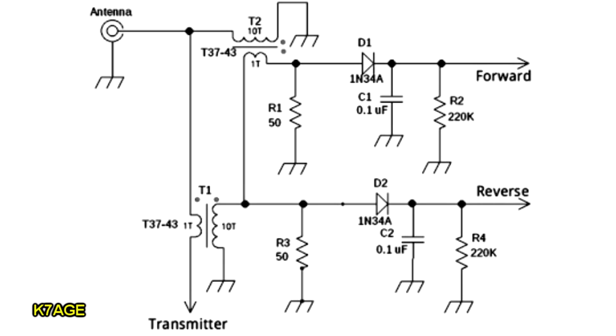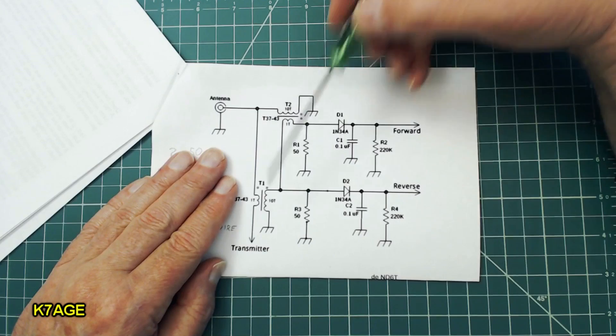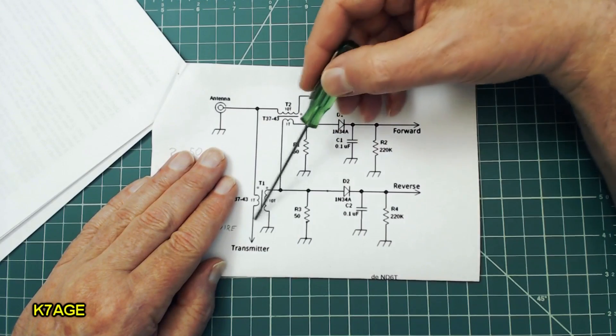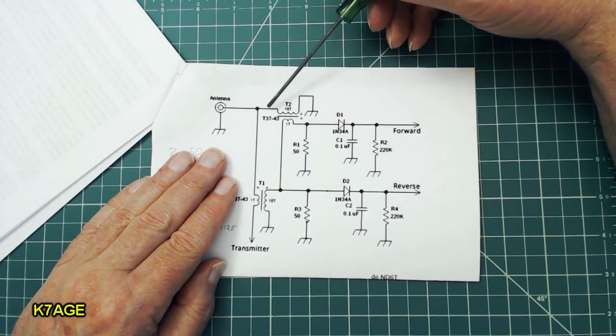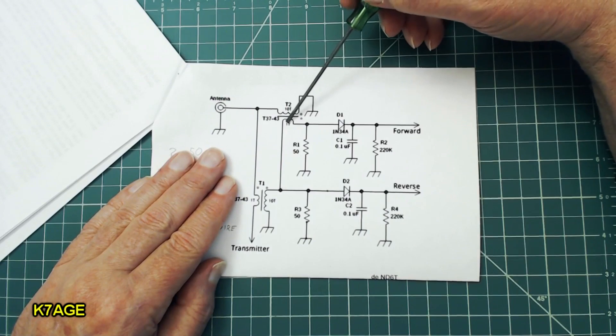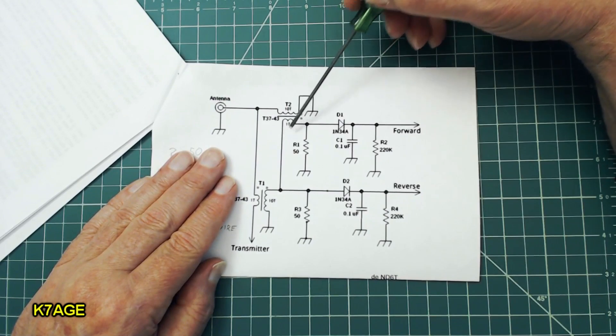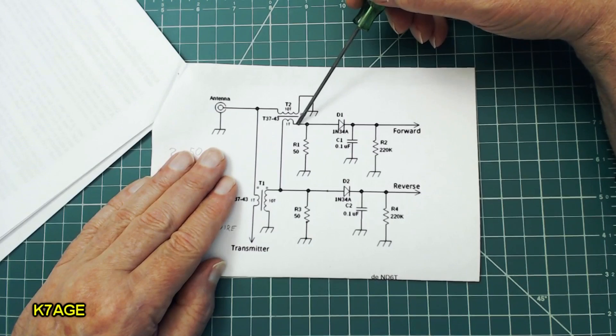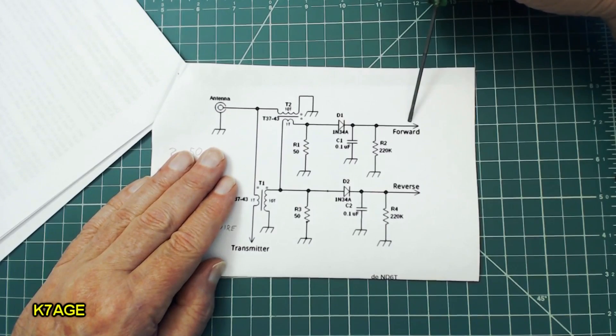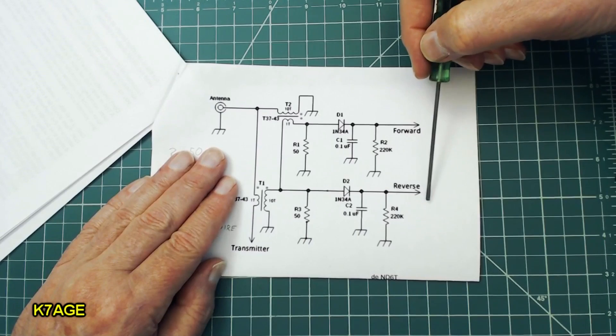So with a toroid, one turn is just the wire passing through the core. It doesn't come back around a second time. So the RF passes through this transformer through the one-turn tap and goes out to the antenna. So this is sensing the current on the line. The voltage is sensed with this second transformer using the 10-turn side. And then with the one-turn side, on each side of that pass-through of the core, we have the two detectors to detect voltage for the forward path of the RF going through and also voltage for the reverse pass.